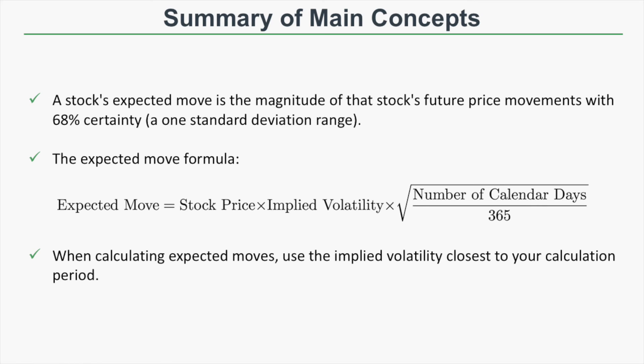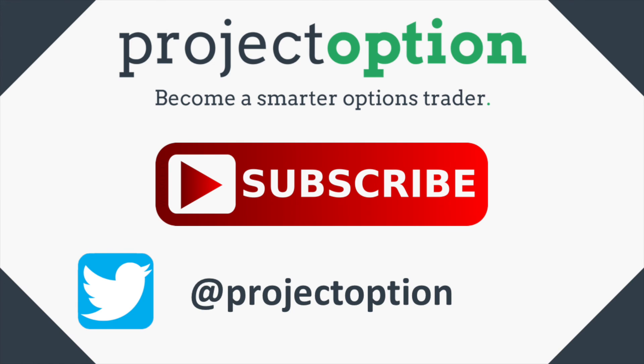Let's recap the main concepts. A stock's expected move is the magnitude of that stock's future price movement with 68% certainty — a one standard deviation range. The expected move formula is the stock price times implied volatility times the square root of the number of calendar days to expiration divided by 365. If you're using trading days, change the denominator from 365 to 252. Lastly, when calculating expected moves, make sure you use the implied volatility closest to your calculation period. Thank you for watching — please subscribe to our YouTube channel for real-time alerts on new videos.